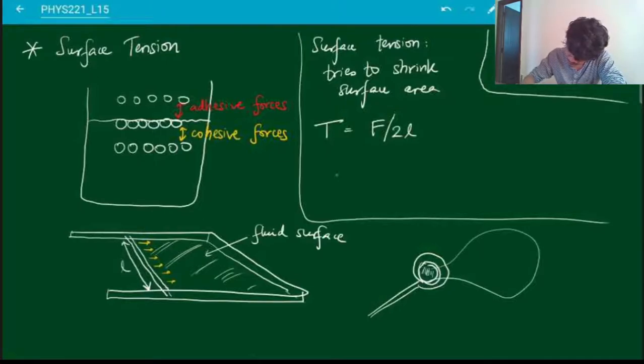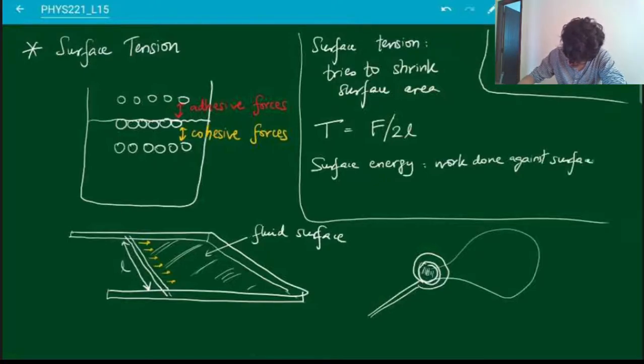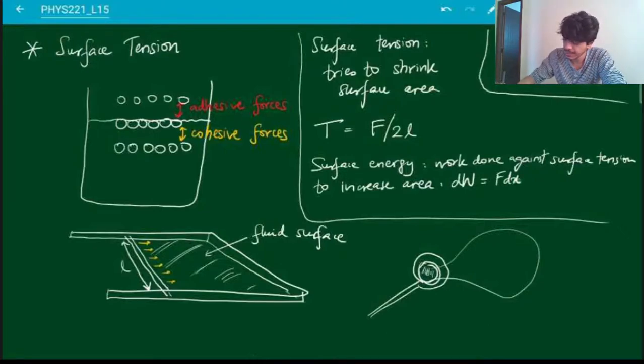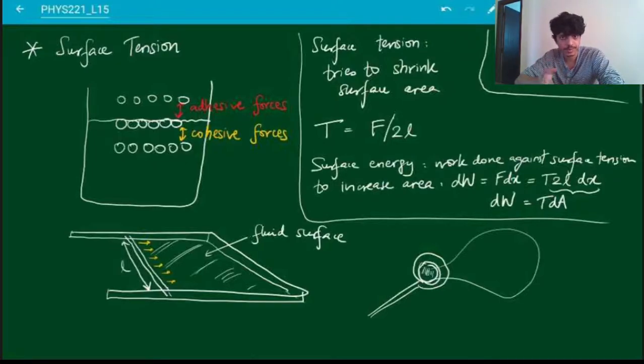You can also define surface energy. This is the work done against surface tension if you want to increase the area of this fluid surface. So dW is F dx, but F is just T times 2L. So dW equals T times 2L dx. Two times L dx is the change in the area—again, factor of 2 because there are two areas you're increasing at the same time, the top and bottom area. So this is the surface energy.